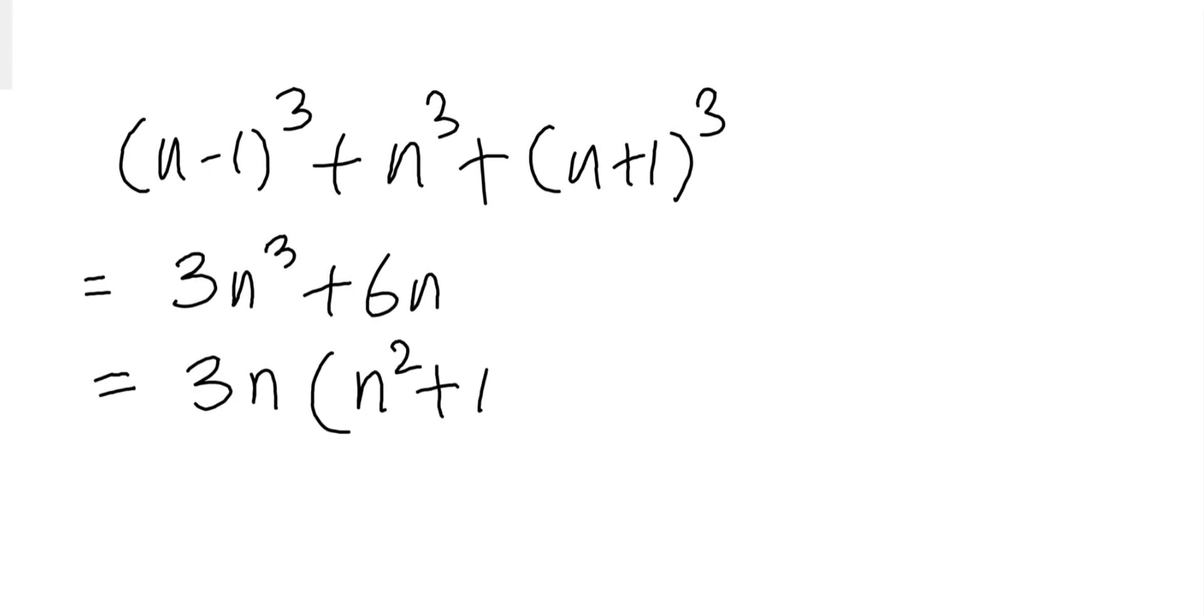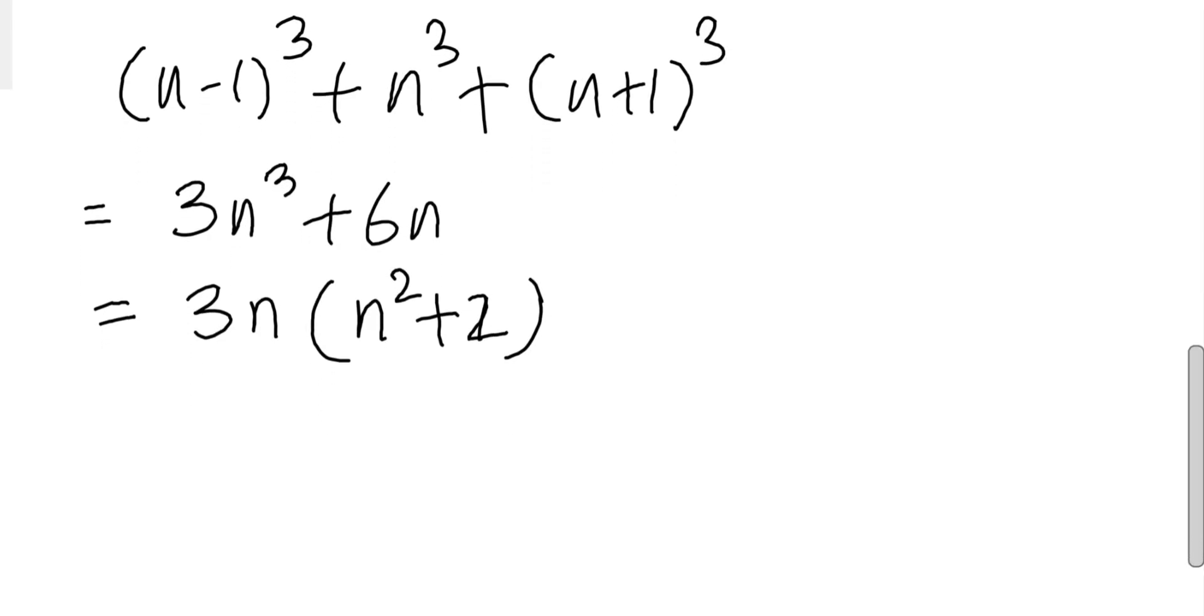Okay, and then again let's do one thing. Let's subtract 1 and add 1 to this, so what will happen is this will become 3n into n² - 1 + 3.